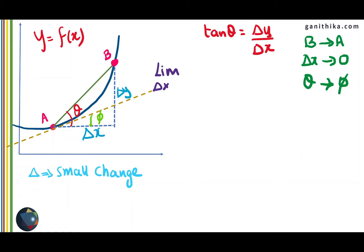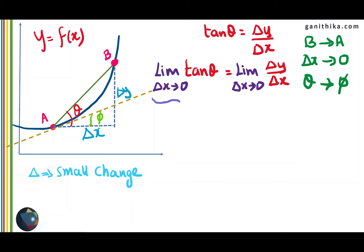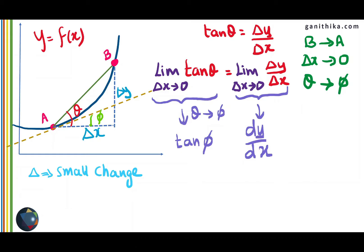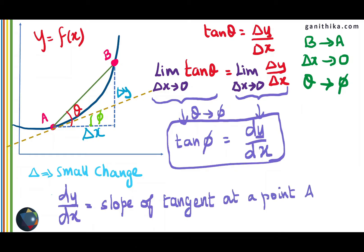With these three conditions we can apply the limit on both sides of the expression: limit as delta x tending to zero of tan(theta) equals limit as delta x tending to zero of delta y over delta x. We use this limit because that's what we have when B approaches A. As delta x tends to zero, theta tends to phi, therefore the limit of tan(theta) becomes tan(phi). On the right hand side, this limit is written as dy over dx. So tan(phi) equals dy over dx, and this dy over dx is the derivative of y with respect to x. Phi is the angle that the tangent makes with the x-axis, therefore dy/dx is the slope of the tangent at point A on the function f of x.